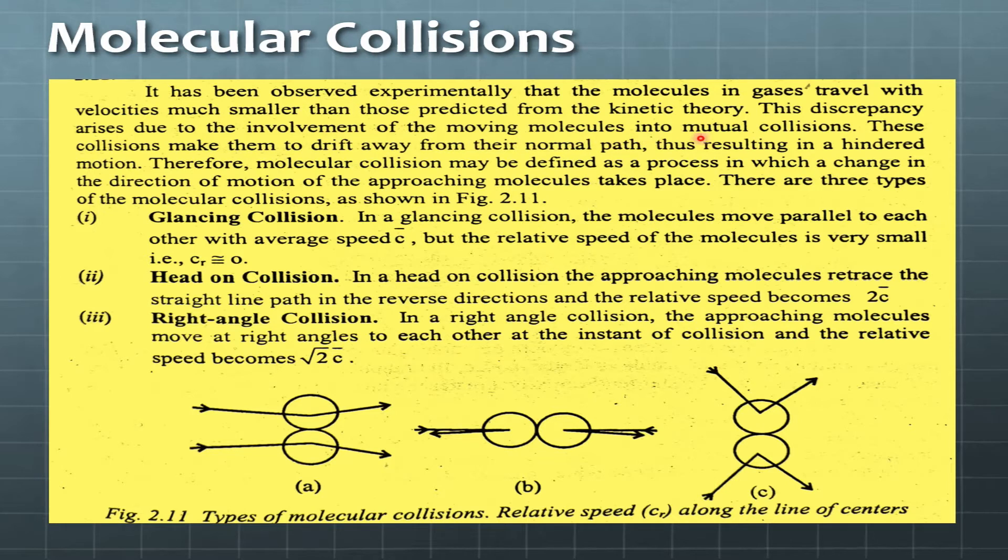This discrepancy arises due to the involvement of the moving molecules into mutual collisions. The speed that kinetic molecular theory predicts is reduced because molecules collide with each other, and after collision some molecules' velocity changes, some decrease, and some may remain the same. These collisions make them drift away from their normal path, thus resulting in a hindered motion. Not only does the direction of motion get diverted, but the speed can also decrease or stop.